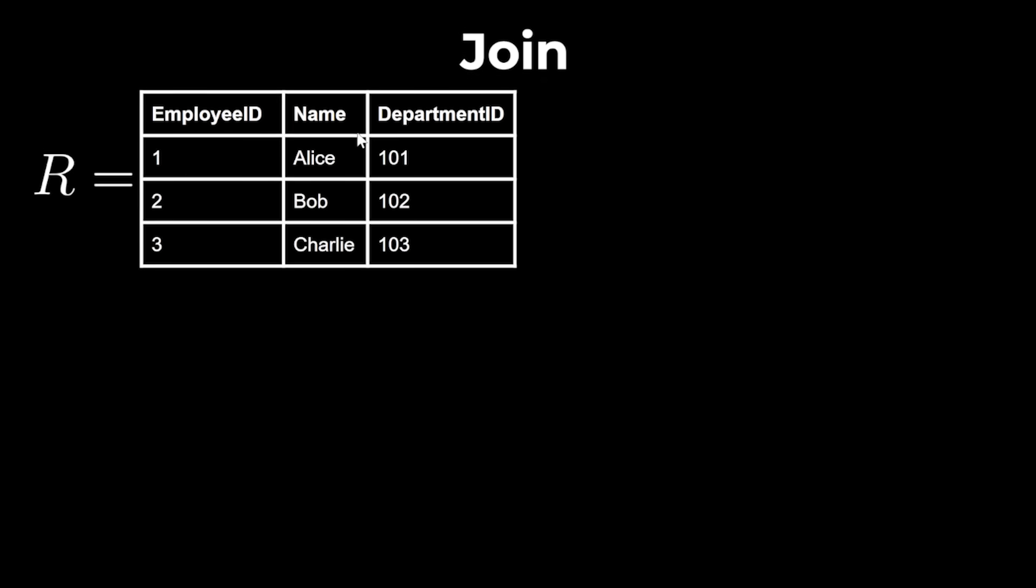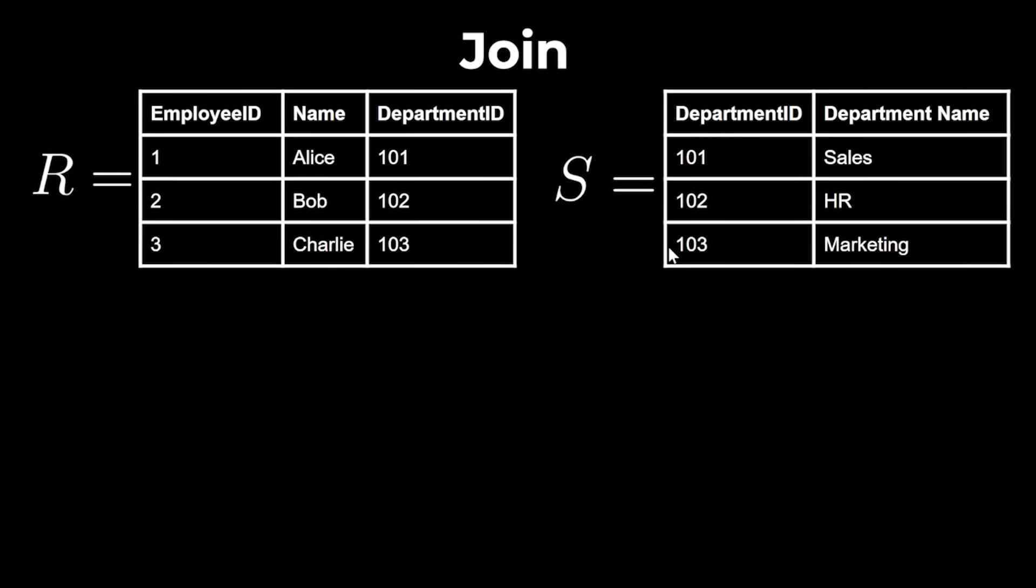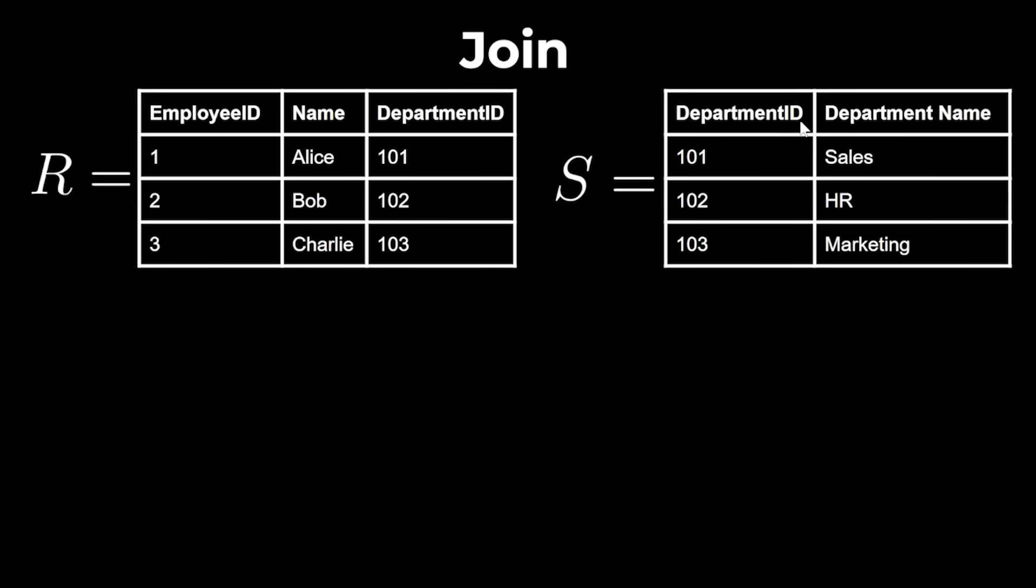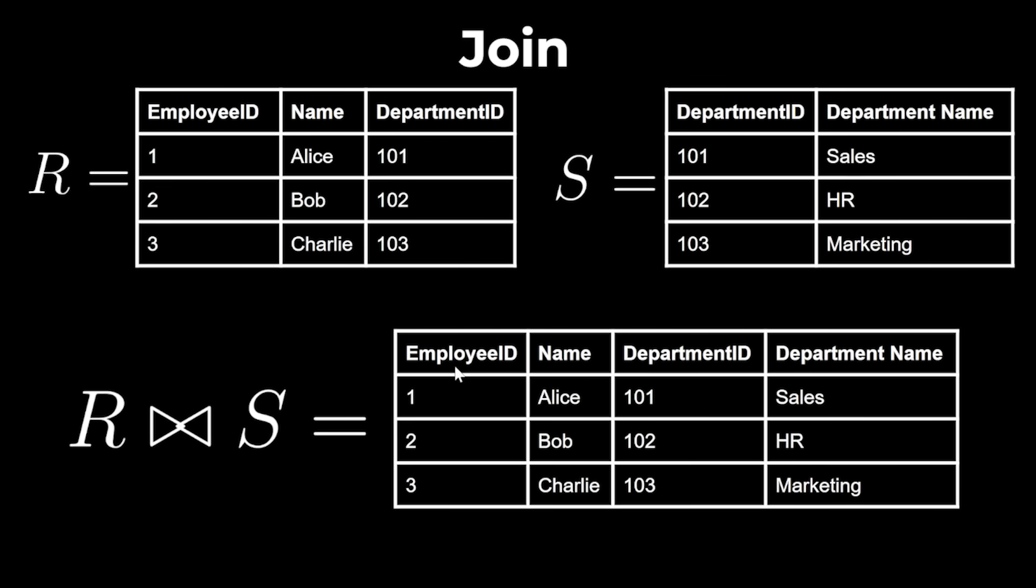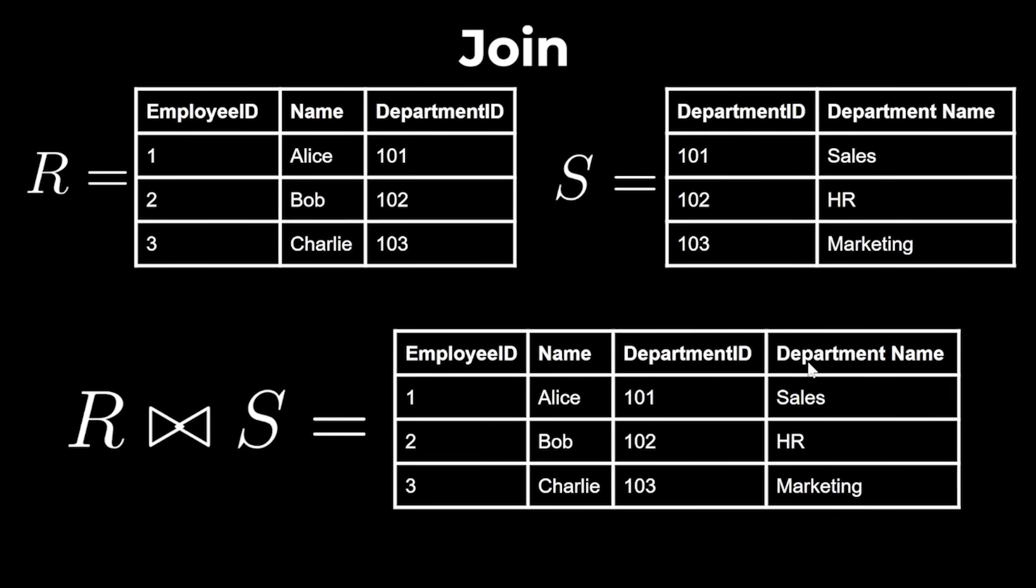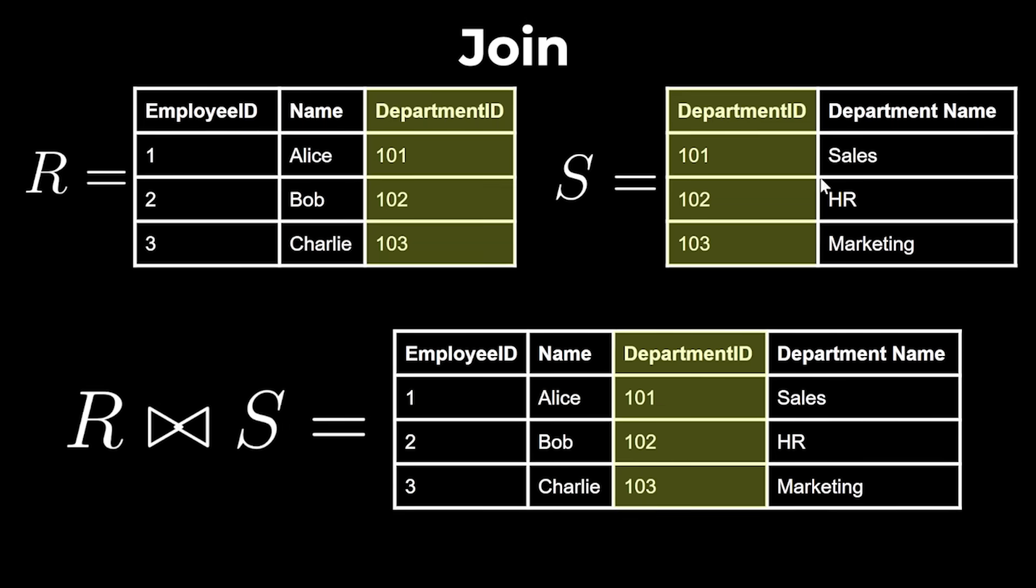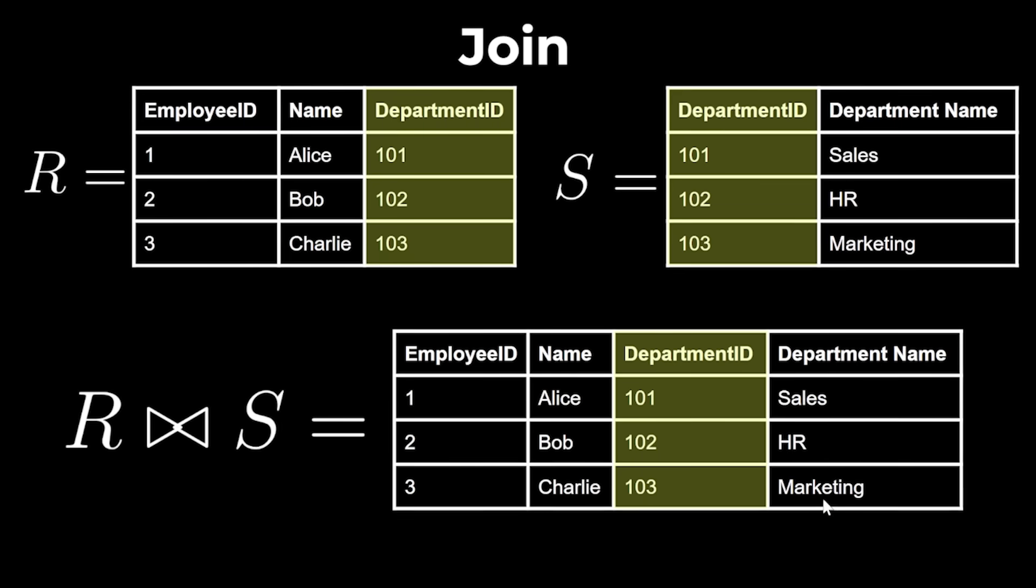If R is the table with columns Employee ID, Name, and Department ID, and S is the table with columns Department ID, Department Name, then R join S is the table with columns Employee ID, Name, Department ID, and Department Name. The Department IDs just get joined together into one table.